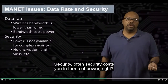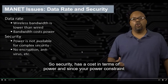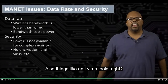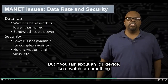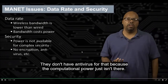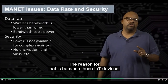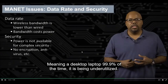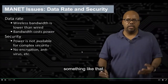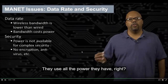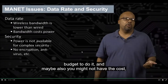Security often costs you in terms of power. If you want to do encryption — take all your messages and encrypt them before sending — that takes power. So security has a cost in terms of power, and since you're power constrained, you may not be able to do as much security as you'd like. Also, things like antivirus tools — you never see antivirus for IoT devices like a watch because the computational power just isn't there. Desktop laptops are underutilized 99.9% of the time, so they have extra cycles for antivirus tasks. Embedded IoT systems don't have those excess cycles, so security often suffers.